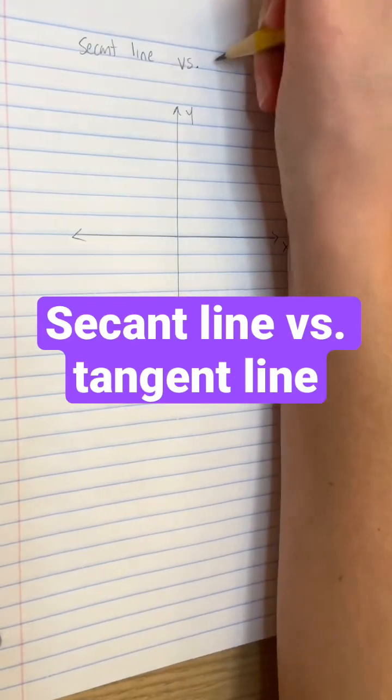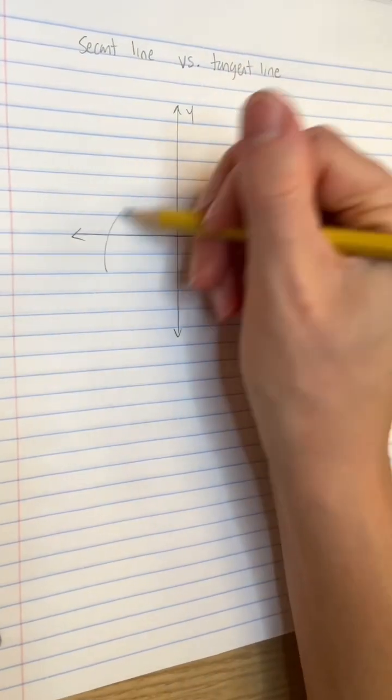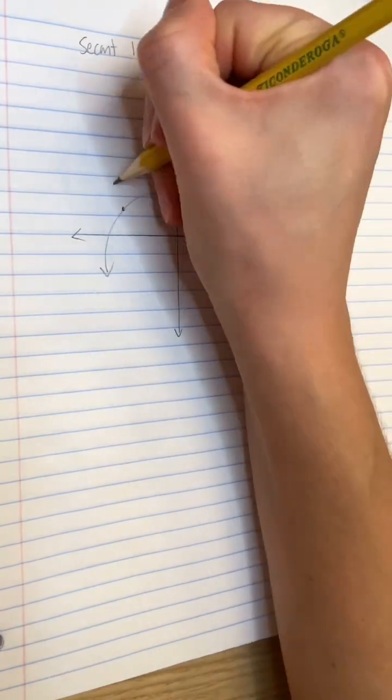So what's the difference between a secant line and a tangent line? Well, let's hop onto the xy plane with some continuous function called f of x.